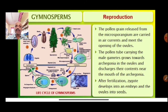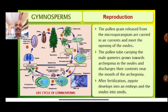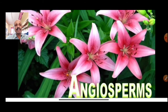Pollen grains released from the microsporangia are carried by air currents and reach the opening of the ovules, where fertilization occurs. The pollen tube carries the male gametes, grows towards the archegonia, and discharges its contents near the mouth of the archegonia. After fertilization, the zygote develops into an embryo and the ovule develops into a seed.